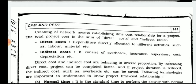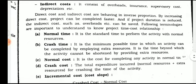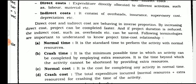Crashing of network means establishing a time-cost relationship for a project. The total project cost is the sum of direct cost and indirect cost. Direct cost is the expenditure directly allocated to different activities such as labor and materials. Indirect cost includes overhead, insurance, supervisory cost, depreciation cost, etc. Direct cost and indirect cost behave in inverse proportion — by increasing direct cost, the project can be completed faster.